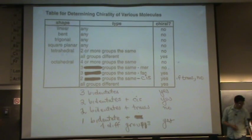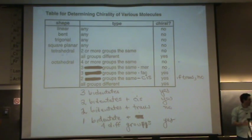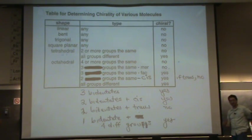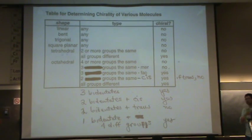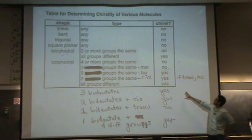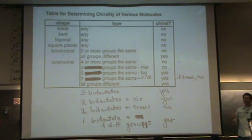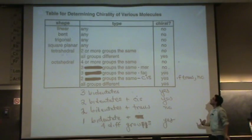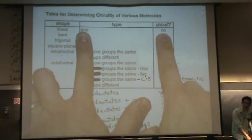To understand this table, you've got to know your VSEPR shapes. This table helps you determine if something is chiral. If it's chiral, it has stereoisomers, it has an enantiomer, and it rotates plane polarized light. So if it has a linear VSEPR shape, it is not going to be chiral — and it doesn't matter how it's arranged in space, it's not chiral.